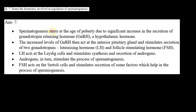Spermatogenesis starts at the age of puberty due to significant increase in the secretion of gonadotrophin releasing hormone, that is GnRH — a hypothalamic hormone. सबसे पहले हमारे hypothalamus से GnRH release होता है at the age of puberty, और उसी age पे हमारा spermatogenesis start होता है.